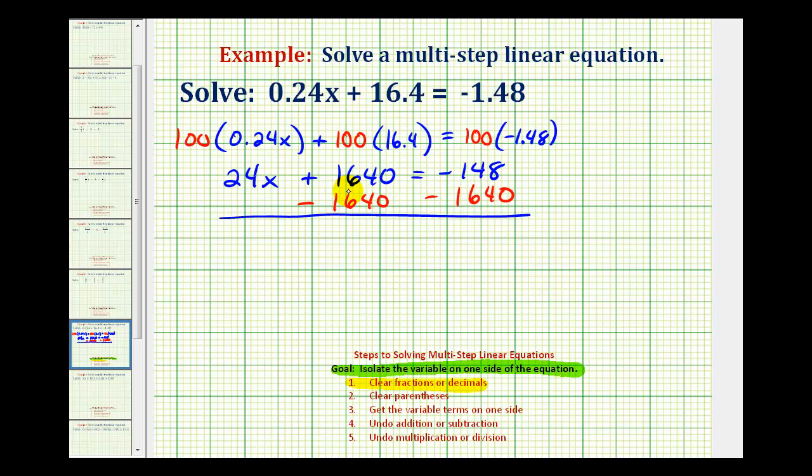Notice that plus one thousand six hundred forty minus one thousand six hundred forty would be zero. So we're left with twenty-four x equals this difference here, and let's be a little careful here.